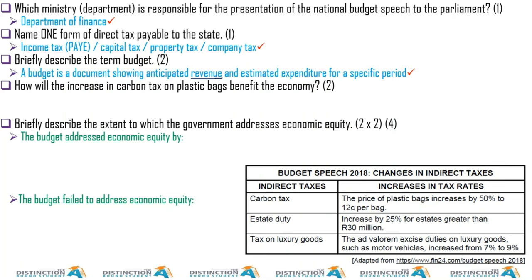We all know where the government gets its money — the main source is tax revenue. The finance minister works with SARS, which collects tax on behalf of the National Treasury. SARS then hands the money to the National Treasury, which allocates funds to different ministries like Health, Education, and others. Each ministry receives funding determined by government revenue.